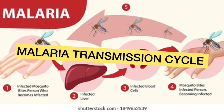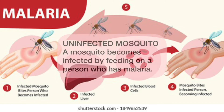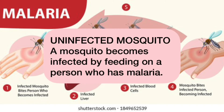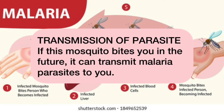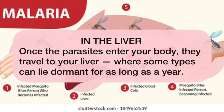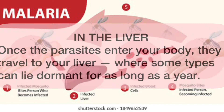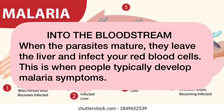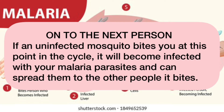Let's take a look at the malaria transmission cycle, beginning with the mosquito transmission cycle. A mosquito becomes infected by feeding on a person who has malaria. If this mosquito bites you in the future, it can transmit malaria parasites to you. Once the parasites enter your body, they travel to your liver, where some types can lie dormant for as long as a year. When the parasites mature, they leave the liver and infect your red blood cells. This is when people typically develop malaria symptoms. If an uninfected mosquito bites you at this point in the cycle, it will become infected with your malaria parasites and can spread them to the other people it bites.